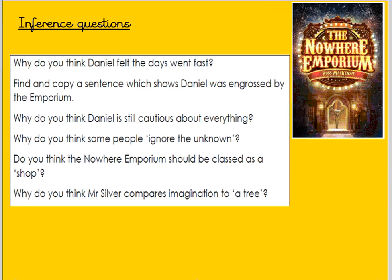The inference questions are: Why do you think Daniel felt the days went fast? Find and copy a sentence which shows Daniel was engrossed by the emporium. Why do you think Daniel is still cautious about everything? Why do you think some people ignore the unknown? Do you think the Nowhere Emporium should be classed as a shop? Why do you think Mr Silver compares imagination to a tree? These questions need you to look carefully for evidence to support your answers.